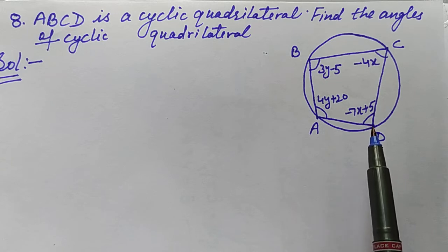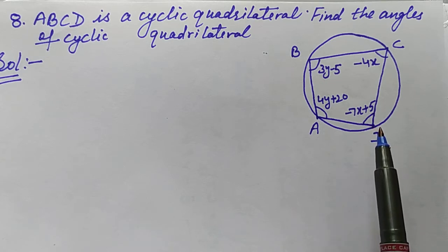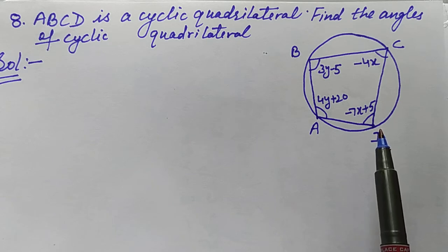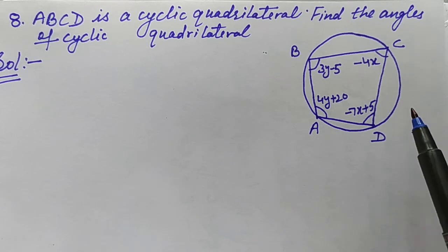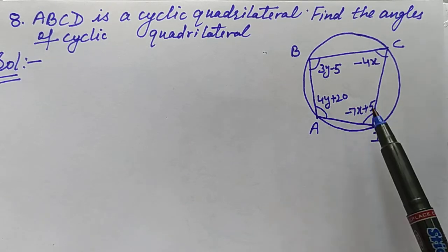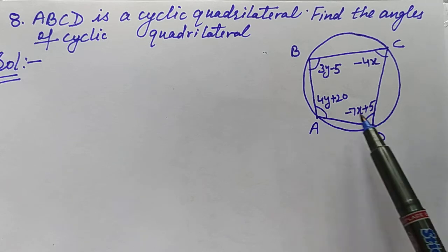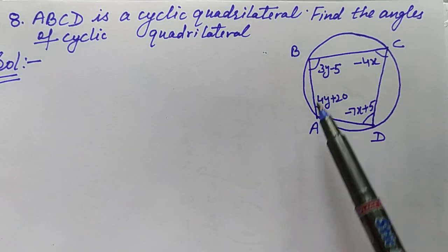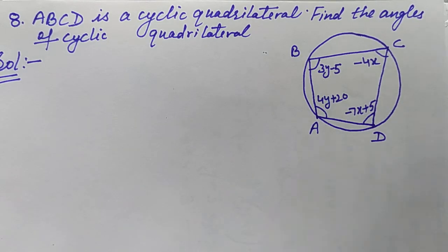From these two properties we will get two equations in x and y. Then, using elimination or any other method, we will solve the two equations and get the values of x and y. We will then substitute these values into the different angles to find their measures.